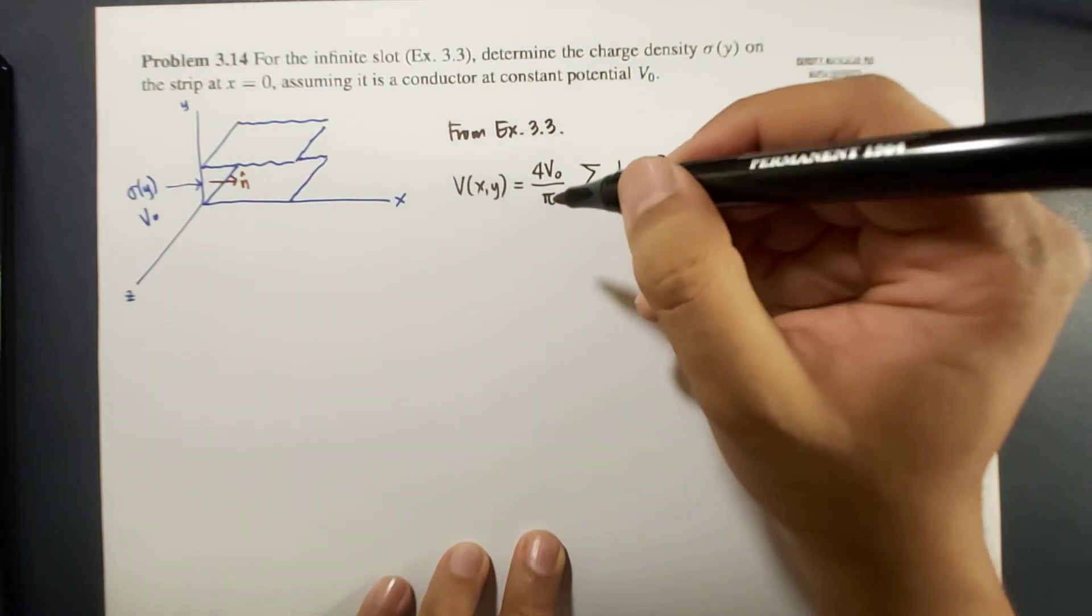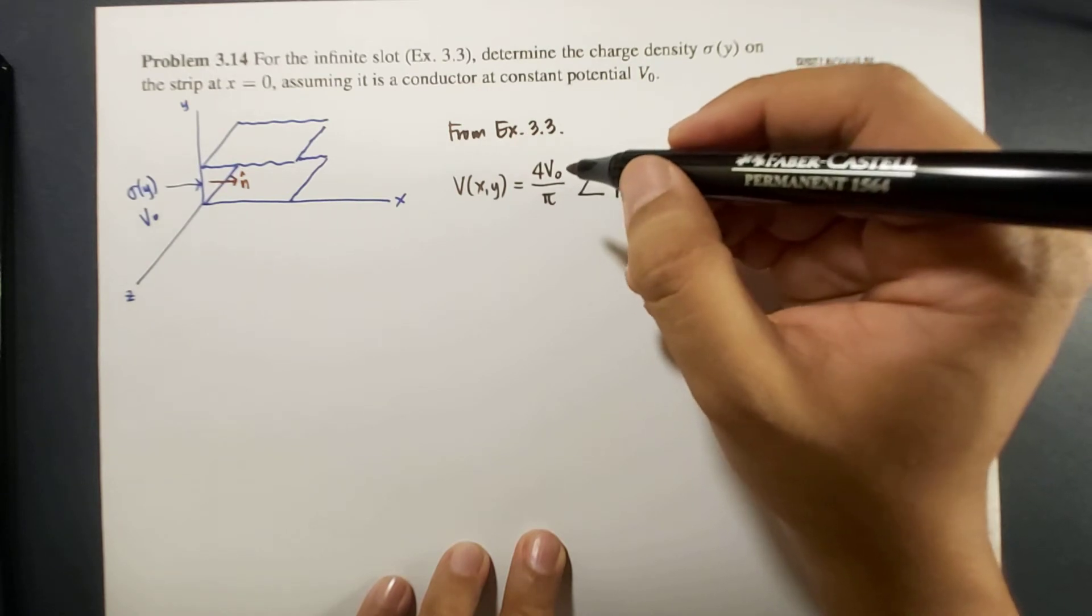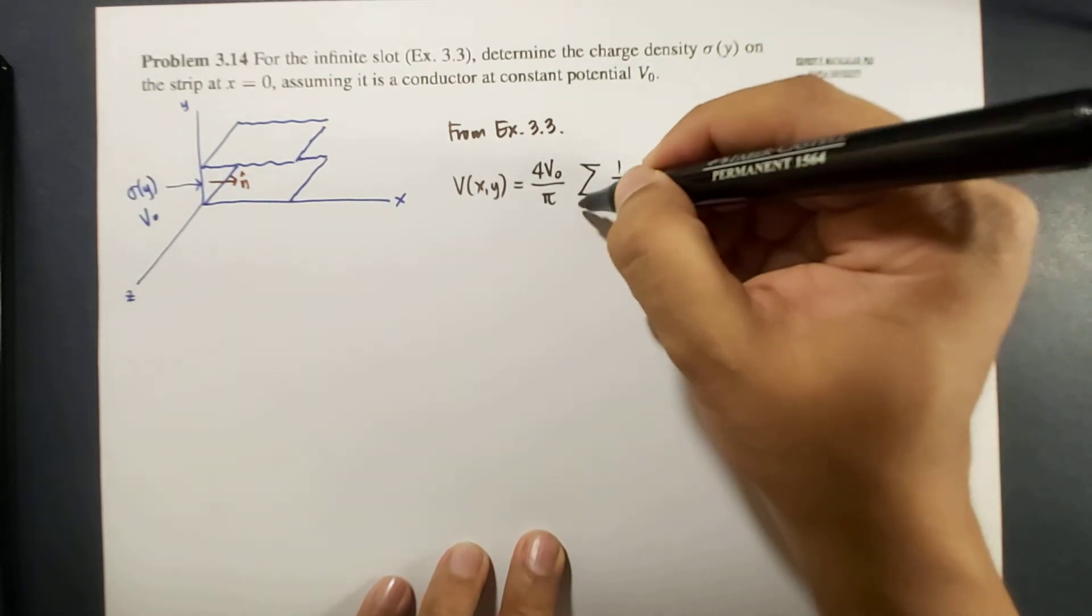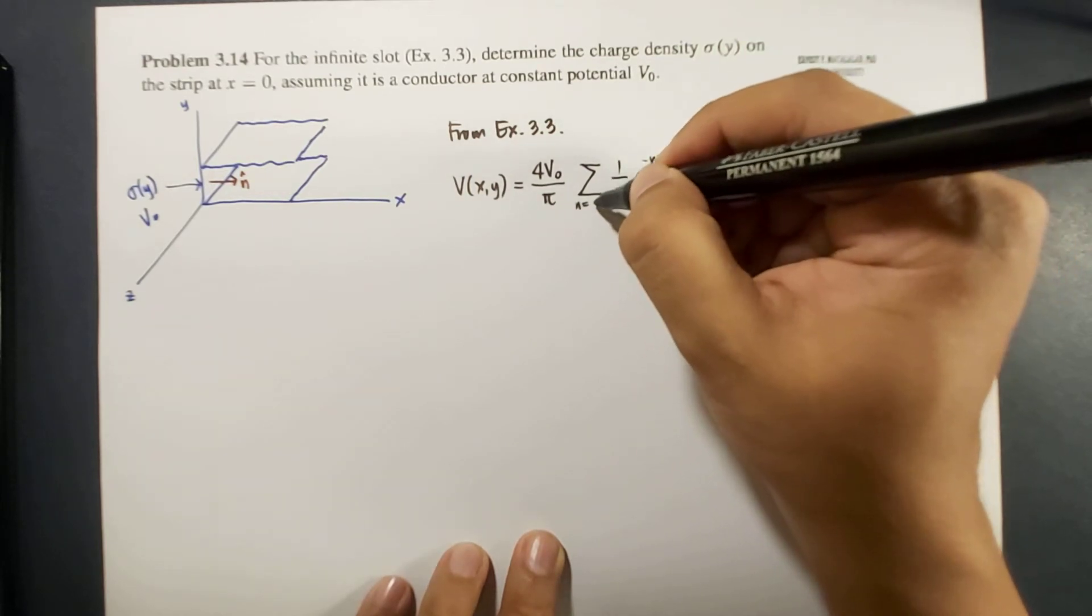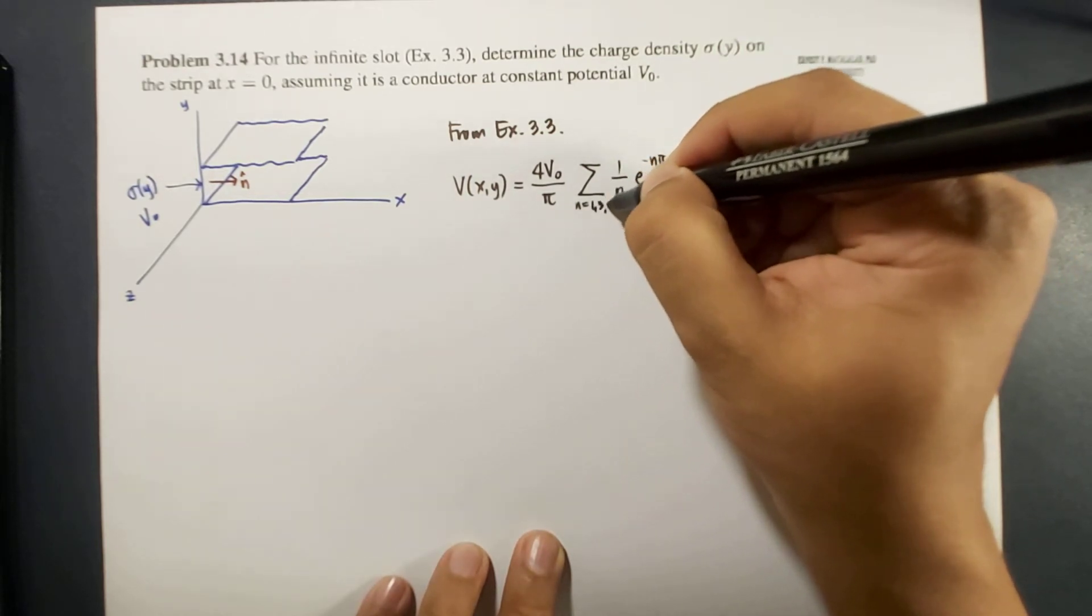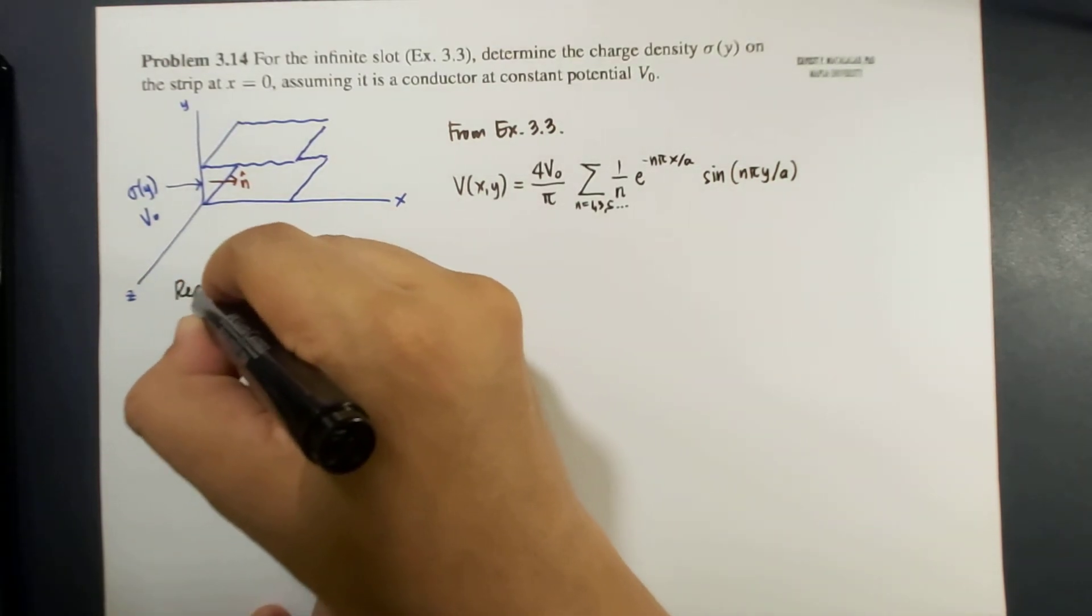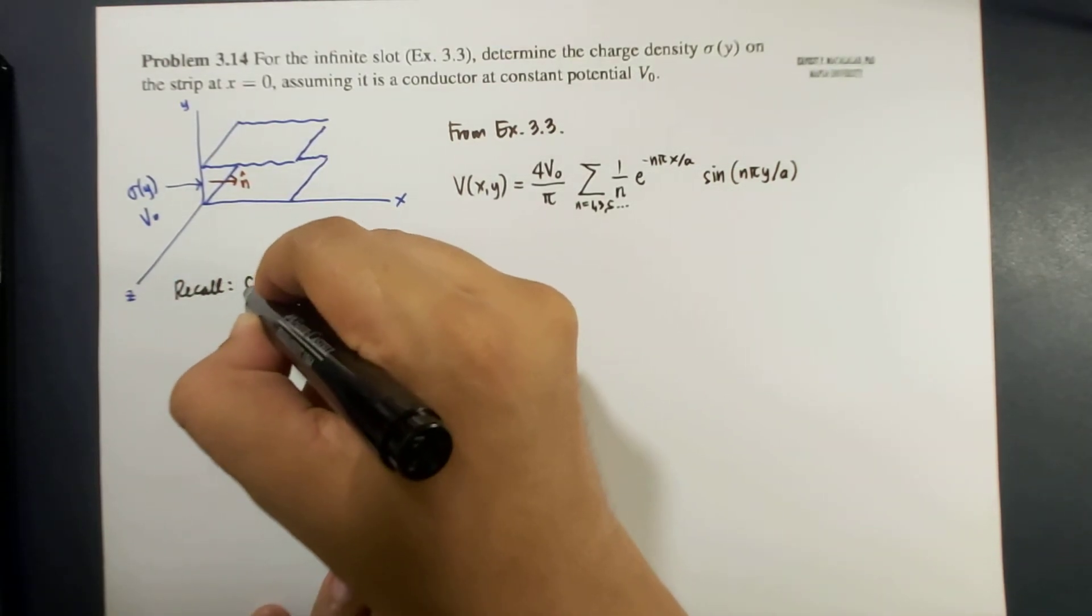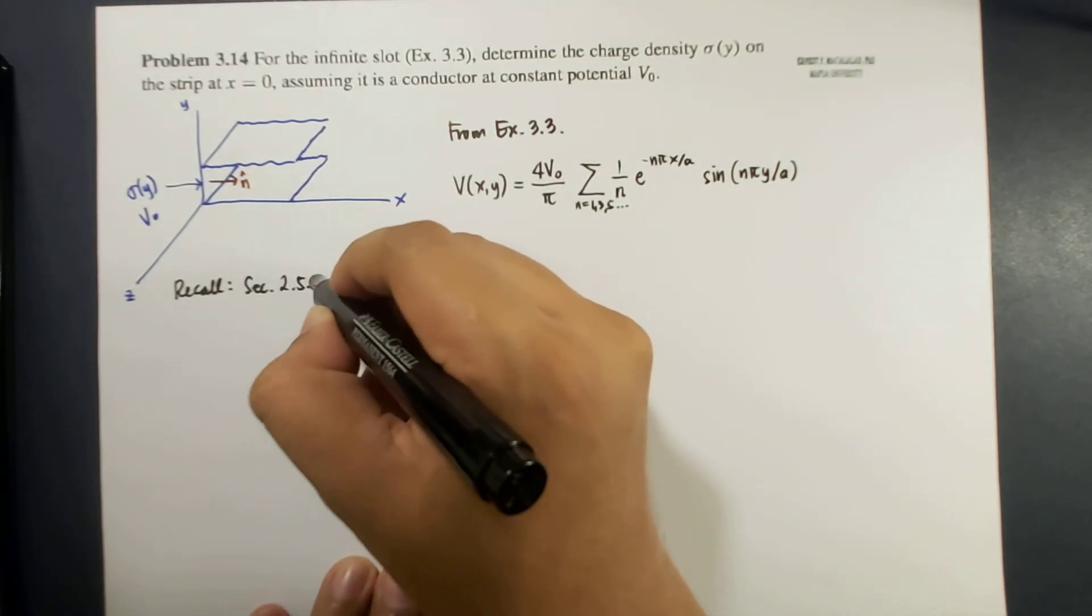Okay, so here, we set that our n are odd integers. So that's 1, 3, 5, etc. Okay, so remember, recall, from section 2.5.3, which is on surface charge and the force on a conductor.